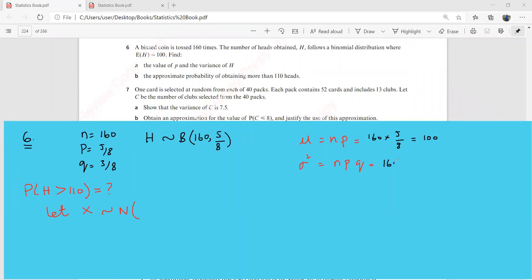So this is 160 times 5 by 8. So that is going to be, I think that is 100. And then NPQ, 160 times 5 by 8 times 3 by 8. So let me find this through the calculator. 3 by 8 times 100. So that is going to be 37.5. You should keep a check on my working here. This is 37.5. So I can mention here that there is a normal distribution whose mean is 100 and whose variance is 37.5.